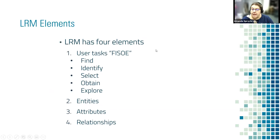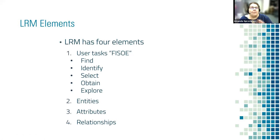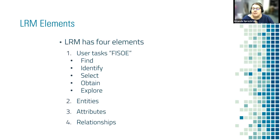The LRM has four elements: the user tasks, which are Find, Identify, Select, and Obtain — and they added Explore, which I think is great, because we all know that wonderful serendipitous feeling of going to look for a particular book on, say, quilts or crocheting, and finding all the books on the shelf next to it and being able to explore what else is there. It also has the entities — the people, the works, the manifestations, the concepts, the time, the places, all of those things. The entities have attributes that describe them, and then there are the relationships between the entities and each other.